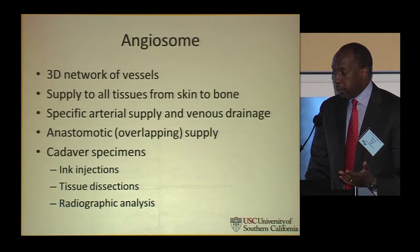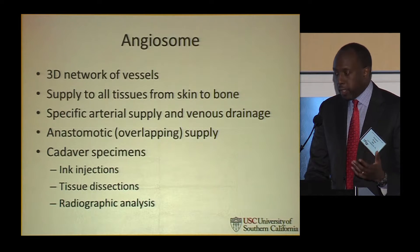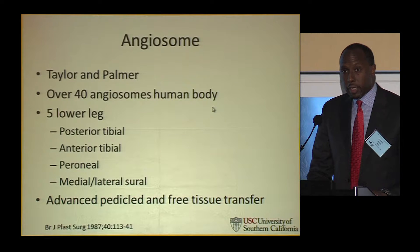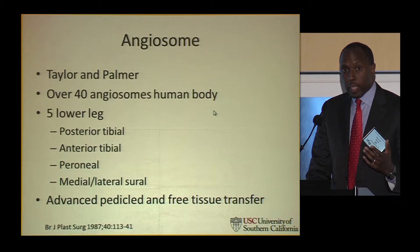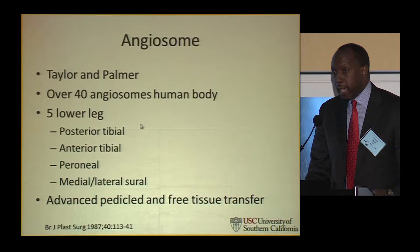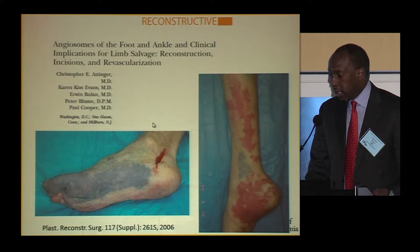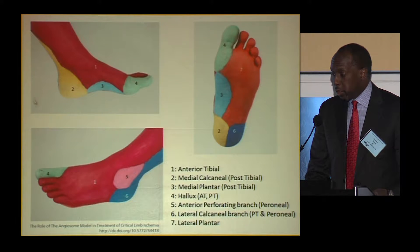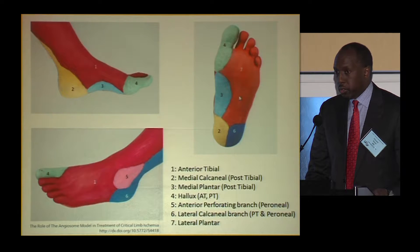For most people they've probably heard of it: the 3D network of vessels supplying tissue, with separate venous and arterial drainage. It was initially described back in 1987 by a couple of plastic surgeons, who described over 40 angiosomes throughout the body. Down in the lower leg they divided them into five. In 2006, Dr. Attinger, a plastic surgeon in Washington, D.C., described the angiosomes directly into the foot — a large portion for the anterior tibial distribution, the posterior tibial distribution, and areas from the peroneal, as well as areas where they interact.